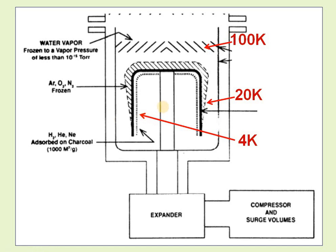A schematic of the cryogenic pump shows multiple panels: a 100 Kelvin panel, a 20 Kelvin panel, and inside, a 4 Kelvin panel. In the first stage at around 100 Kelvin, water vapor and hydrocarbons are deposited. In the second stage at 20 Kelvin, oxygen, nitrogen, and argon-like gases are deposited by entrainment. The temperature is then brought down further, and at 20 Kelvin, argon, oxygen, and nitrogen are deposited by the cryotrapping process.